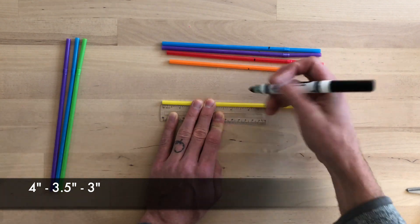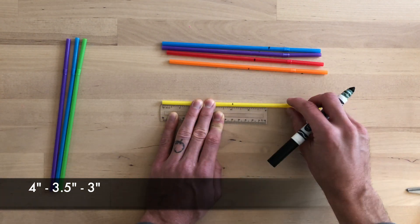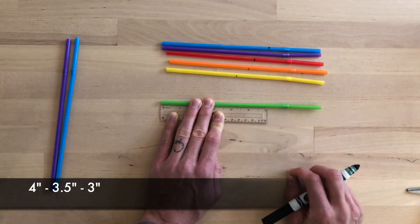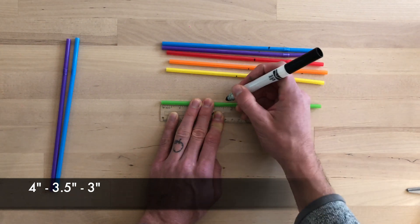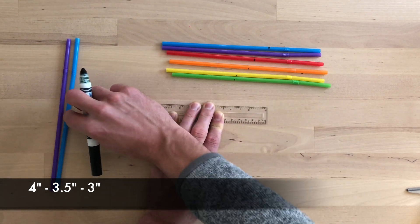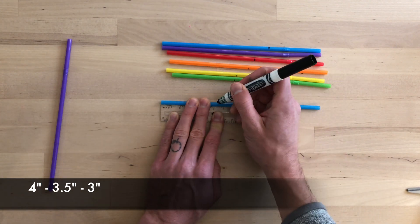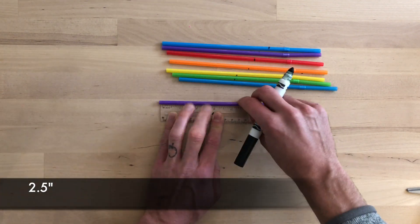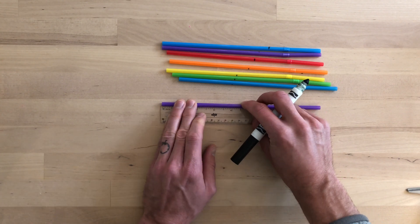Your next three straws will be four inches, three and a half inches, and your last straw will be two and a half inches.